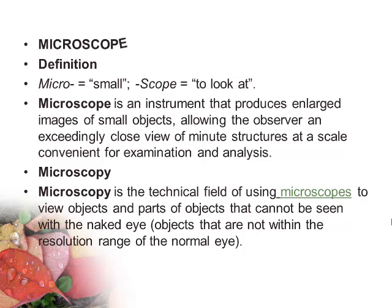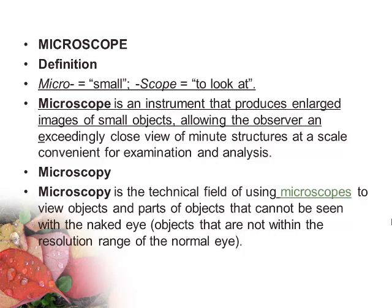The word microscope is derived from two Greek words: 'micro,' which means small, and 'scope,' which means to look at. A microscope is an instrument that produces enlarged images of small objects, allowing the observer an exceedingly close view of minute structures at a scale convenient for examination and analysis.